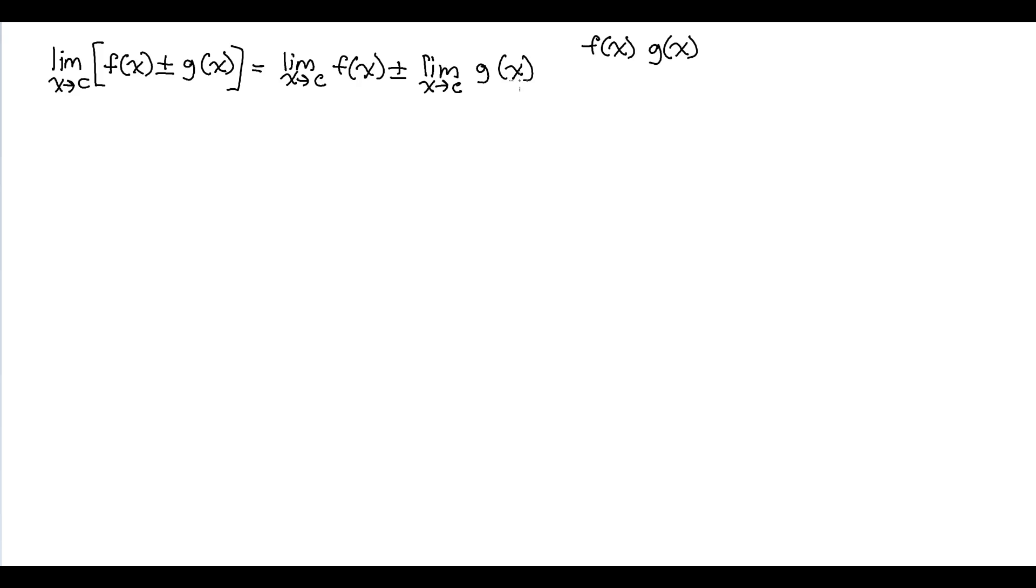If we have a limit as x approaches c of a constant k times f of x, there's another rule. The k will be pulled out—k times the limit as x approaches c of f of x. So that's the constant multiple.